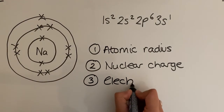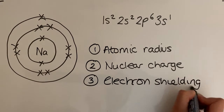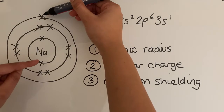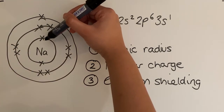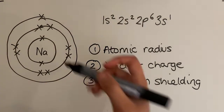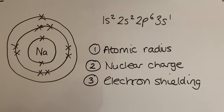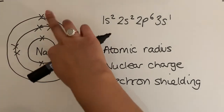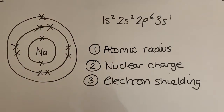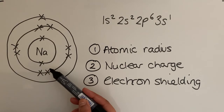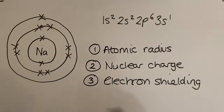The third factor is electron shielding. Between the outer electron and the nucleus there are inner shells. Electrons are all negatively charged, so they repel each other. The more electron shells you have between the nucleus and the outer electron, the less attraction between them, because these shells act as a shield — electron shielding. The more shells between the outer electron and the nucleus, the more electron shielding, and therefore less nuclear attraction.